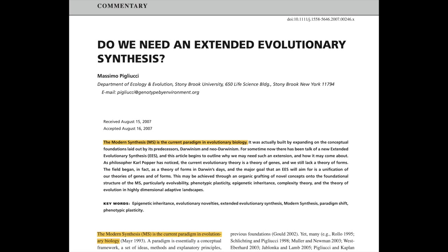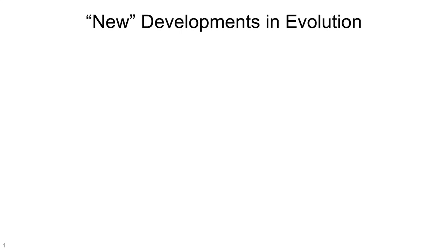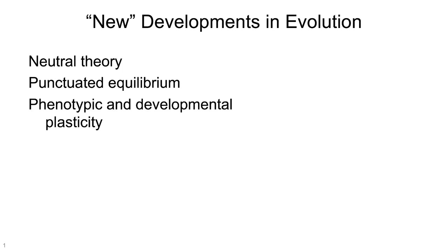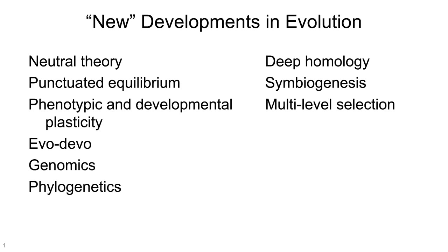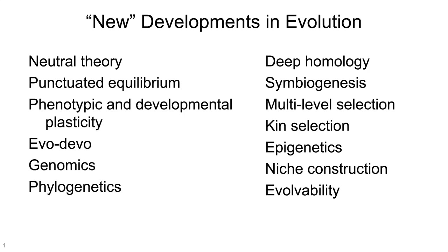This problem is perfectly encapsulated by the first line of a 2007 commentary called 'Do We Need an Extended Evolutionary Synthesis?' by Massimo Pigliucci, which is often taken as the seminal work in the modern concept of the EES. He begins: 'The Modern Synthesis is the current paradigm in evolutionary biology.' No, it's not. The Modern Synthesis is from the 1940s. Here's a partial list of concepts, paradigms, processes, and subfields that have been incorporated into evolutionary theory since then: neutral theory, punctuated equilibrium, phenotypic and developmental plasticity, evo-devo, genomics, phylogenetics, deep homology, symbiogenesis, multilevel selection, kin selection, epigenetics, niche construction, and evolvability as a phenotype. How do I know all this stuff is part of what evolutionary biologists already do, study, and argue about? Because I teach most of it when I teach my introductory class in evolutionary biology. We go through what Jackson covered, from Darwin to the Modern Synthesis, and then we talk about how the field has — pardon the pun — evolved since then. And then we spend most of the rest of the course talking about that new stuff.